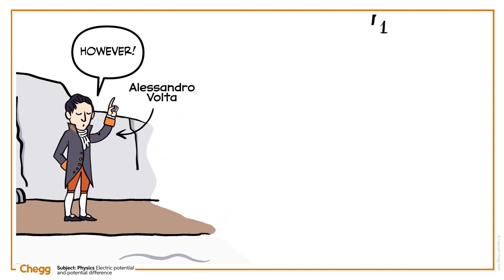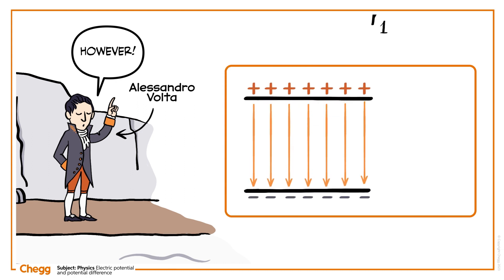However, this is only true if the charge being moved is positive. A positive charge moves from a high potential to a low potential, but if the charge is negative, the reverse is true. The negative charge moves from a low electric potential to a high electric potential.